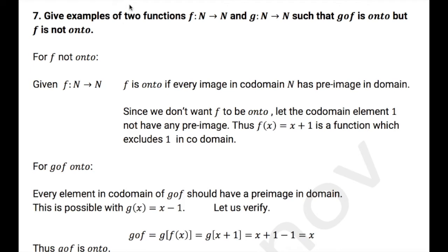For the next question, we need to give examples of two functions where f is mapped N to N and g is also mapped N to N, such that g of f is onto, but f is not onto. Let us find f first.